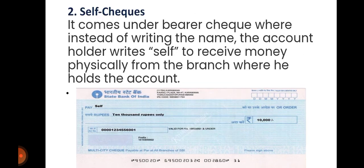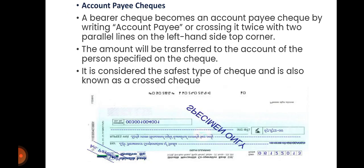Then we have self checks. A self check is your own check. If you want to withdraw money from your own account, instead of writing the name of the beneficiary account or who is supposed to collect the money, you just write 'self.' That means the owner of the account is the one withdrawing the money, cashing the money, collecting it physically. You don't need to write your name multiple times.